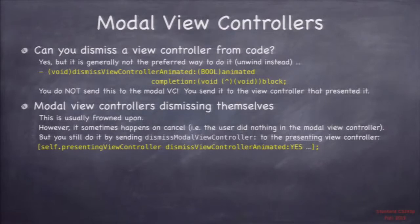It's usually not an issue because in your storyboard you're wiring it up anyway. You could always wire up that cancel button as an unwind instead of having the cancel button do target action and dismiss itself. You can always just disconnect any target action that might be set up.